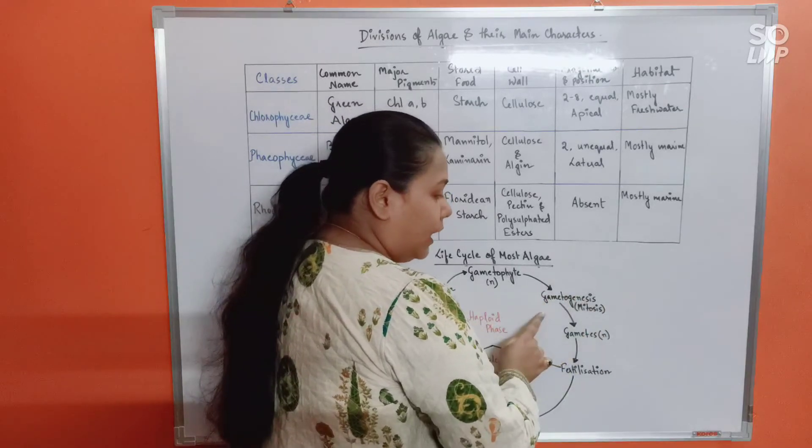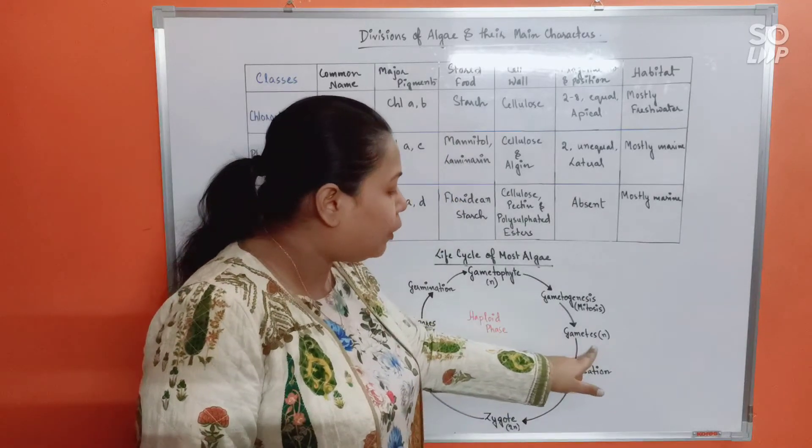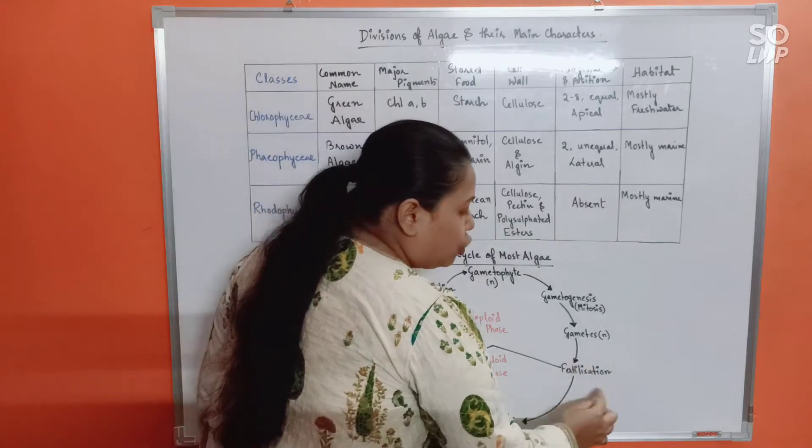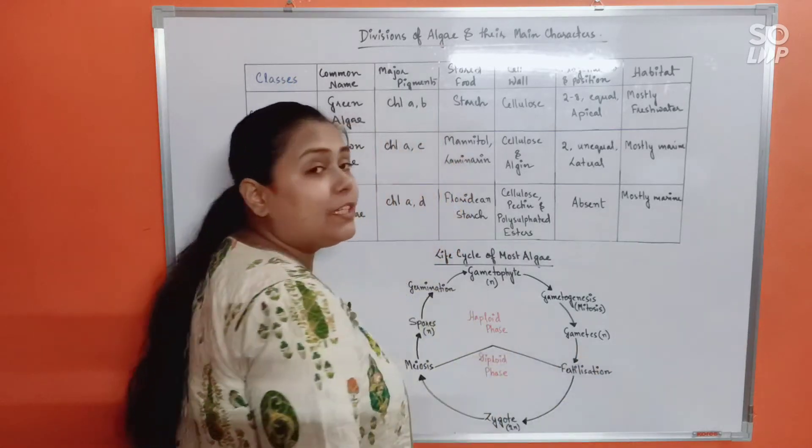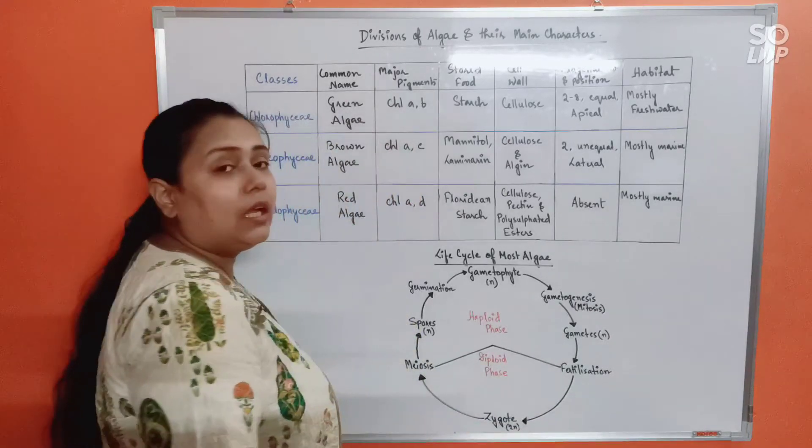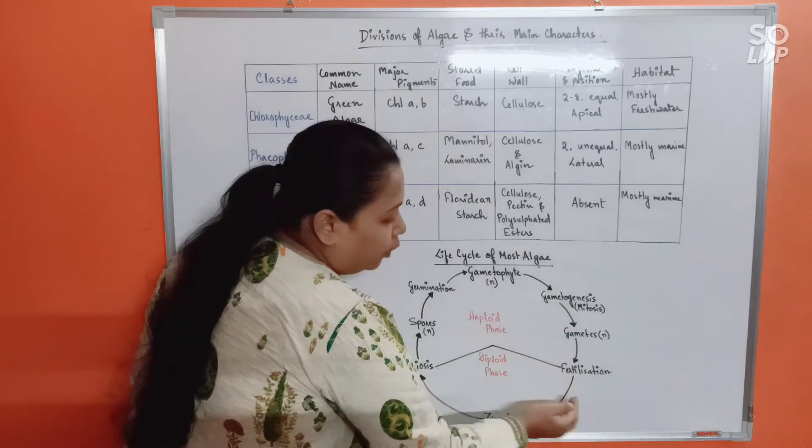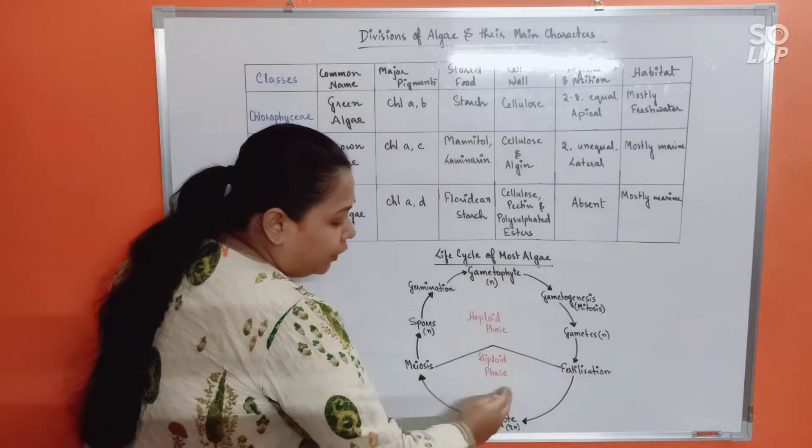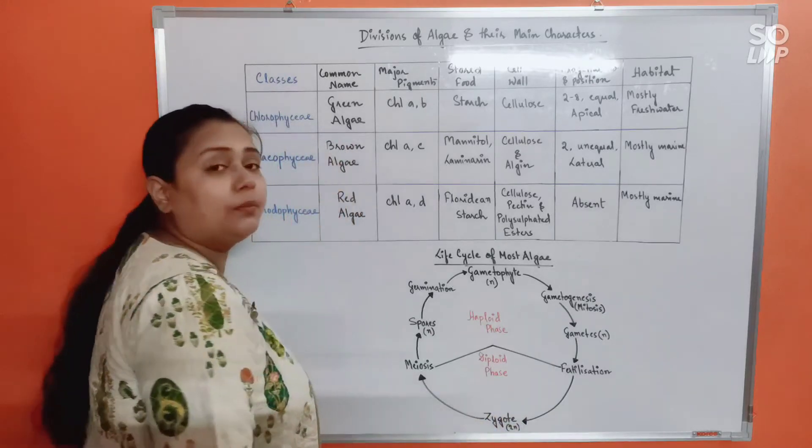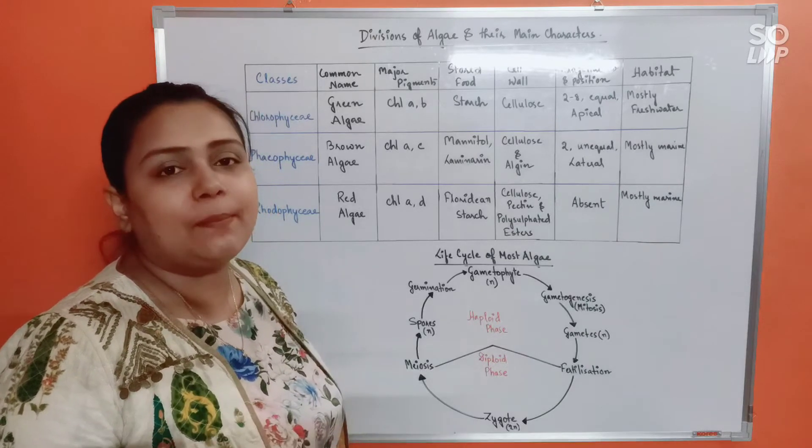This will give rise to haploid gametes, and the haploid gametes will undergo fusion. Fusion of gametes will lead to fertilization, isn't it? And due to fertilization, what would be formed is a diploid zygote. So see here, everything was haploid all this while. The first thing in the life cycle that has been formed diploid is the zygote. The zygote is the only diploid cell that is formed in the life cycle of the algae.